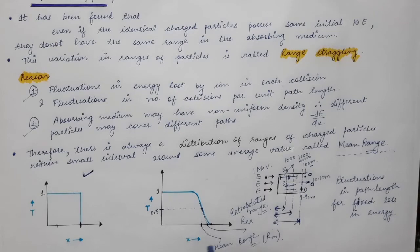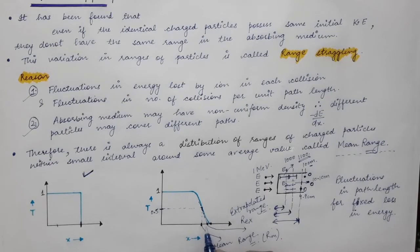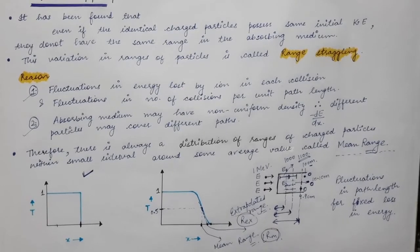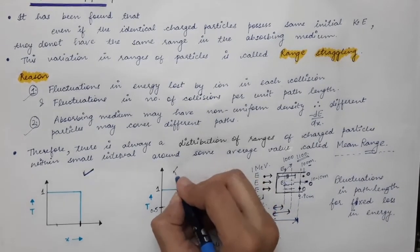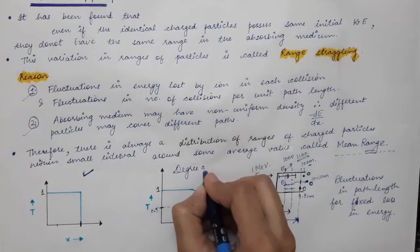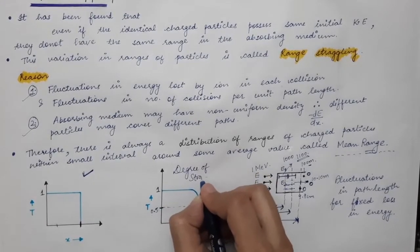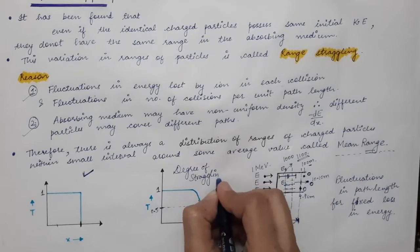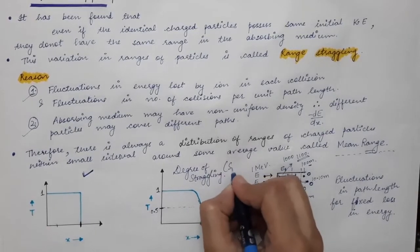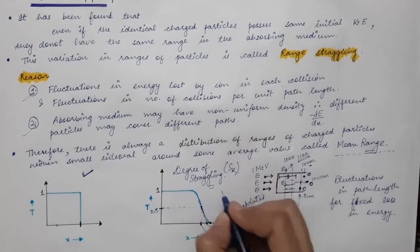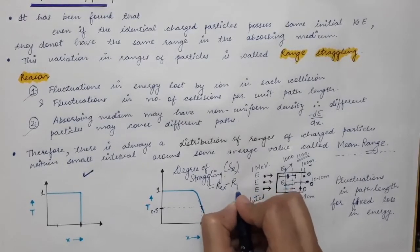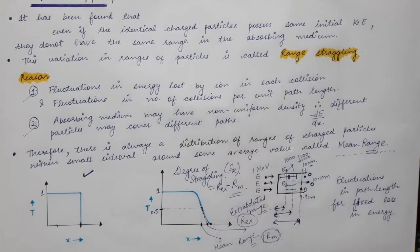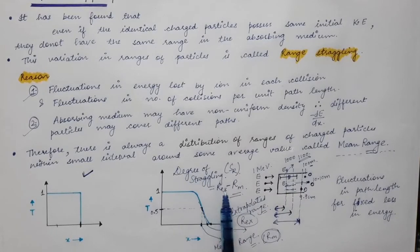The difference between the extrapolated range Rex and the mean range Rm gives the degree of straggling, Sr. So the difference of Rex and Rm represents the degree of straggling.